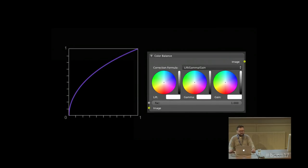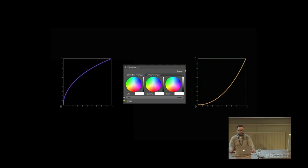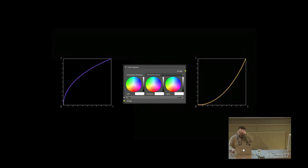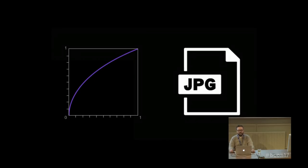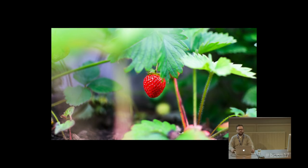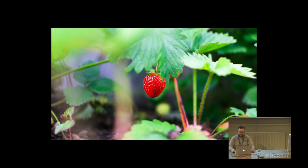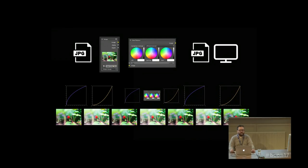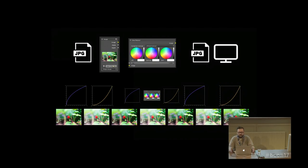When we bring it to the Compositor, the reverse curve is applied — we revert the process that we did. Then we bring this image into the color balance node with the default lift-gamma-gain settings. Inside this node, the image gets gamma encoded again, then our adjustments are performed, and then before it goes out of this node it gets gamma decoded again. So when we save it as a JPEG file, the image gets gamma encoded a third time. And then when it goes to the monitor, the monitor decodes the gamma so we have exactly the same image as before.